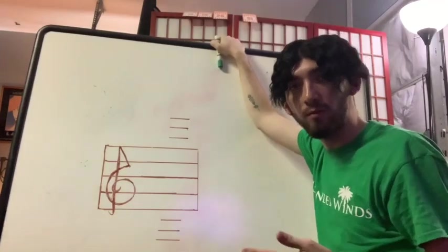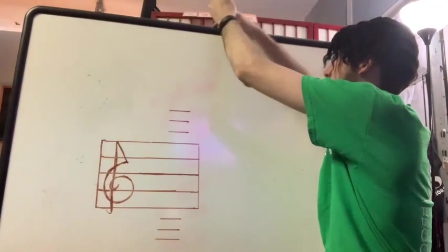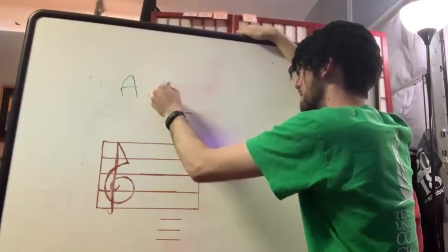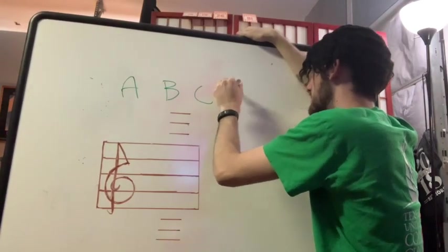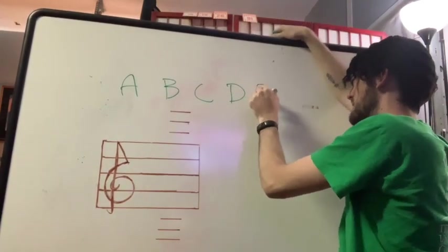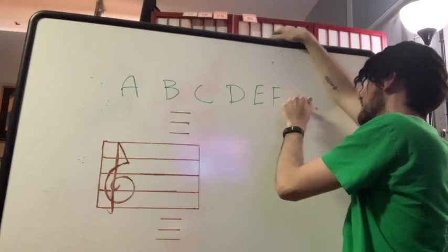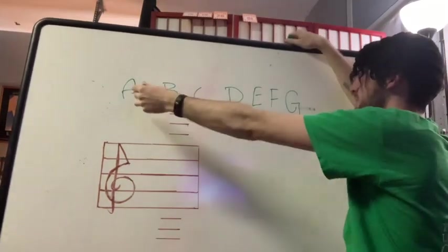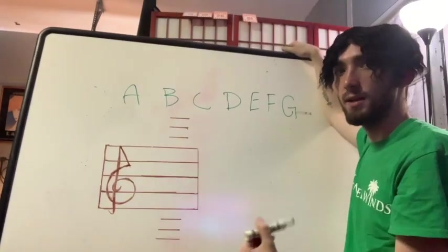However, the alphabet repeats itself as it goes: A, B, C, D, E, F, G, and then it repeats back to A, B, C, D, E, F, G again, right?